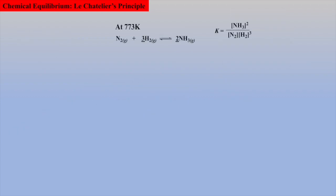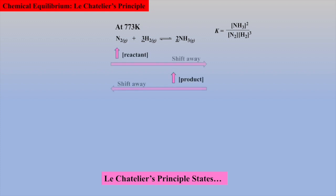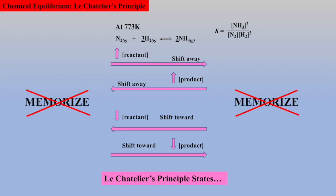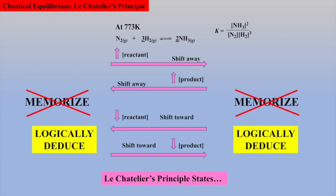So let's first consider changes in concentrations to predict shift by examining an equilibrium we are already comfortable with — the Haber reaction. Le Chatelier's principle states: if you add more of a reactant or more of a product, the shift will be away from the addition; or if you remove reactant or remove product, the shift will be toward the removal. But we don't want to simply memorize these shifts, so let's manually deduce them.